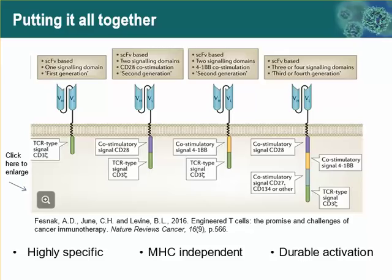Later, adding co-stimulatory domains like CD28 and 4-1BB overcame this anergy to allow the cells to become durably active. These are what allowed the cells to be put into the clinic so quickly. By basing your extracellular portion on B cell-derived, highly-specific receptors, you can achieve high specificity and MHC independence, and it was the addition of co-stimulatory domains in cis that allowed for durable activation.